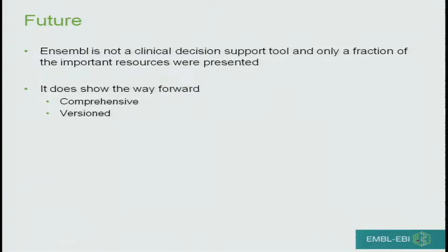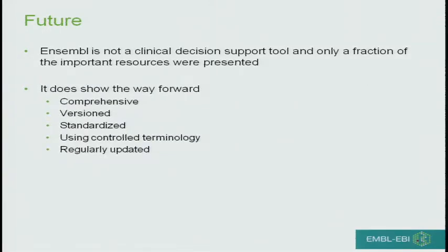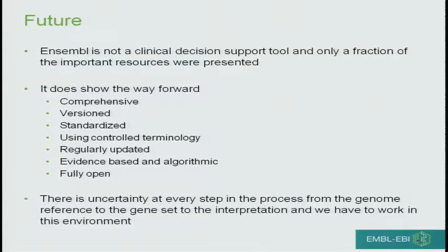The data is comprehensive. It's versioned so you know what you're looking at and when we created it. It's standardized — we use controlled terminology, we update it regularly, and we have both evidence-based and algorithmic aspects to it. We're fully open; all the data can be taken and used. And to say this one more time: there's uncertainty at every step in the process. The genome reference is uncertain, the gene set is uncertain, there is no such thing as a single human gene set. While we all recognize small areas of uncertainty, it's important to recognize that everything is uncertain, and we just have to make the best possible decisions given that.